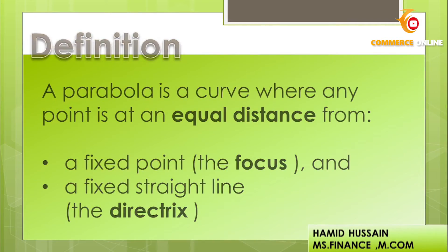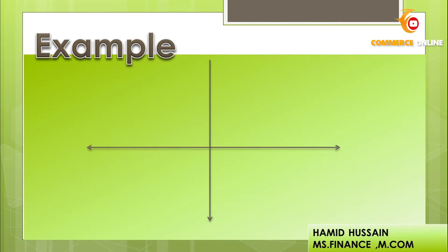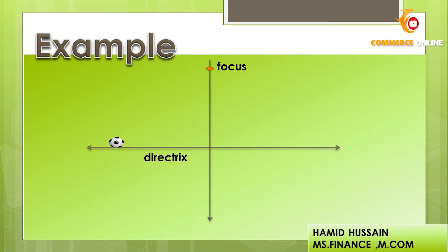As you can see in the example, we have the x-axis and y-axis. On the x-axis we can have a directrix, and the focus is essentially a point on the graph.